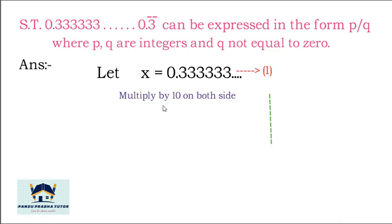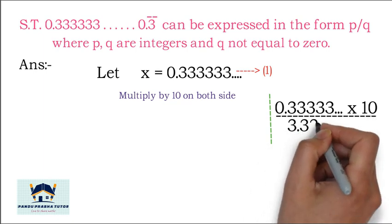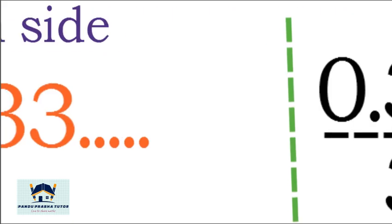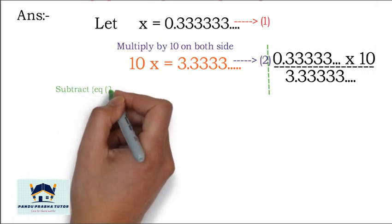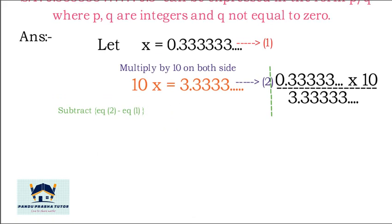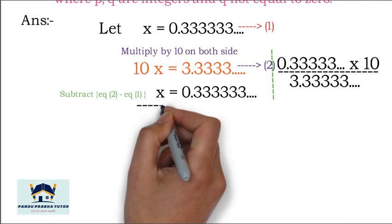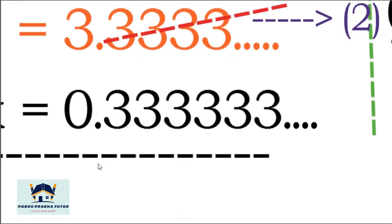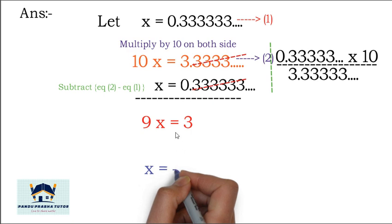Multiply by 10 — just shift the decimal point. We get 10x = 3.3333... — call this equation 2. Now subtract equation 1 from equation 2. The recurring part cancels out since there are infinitely many 3s on both sides.